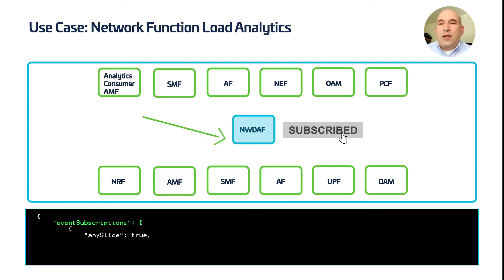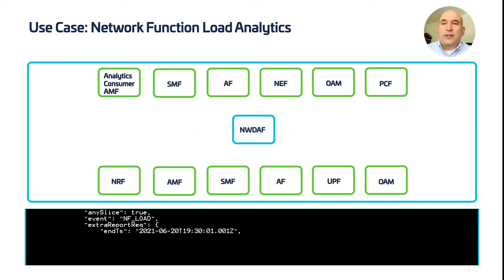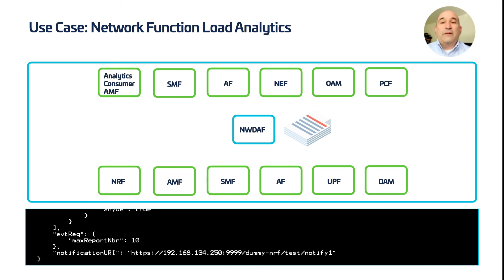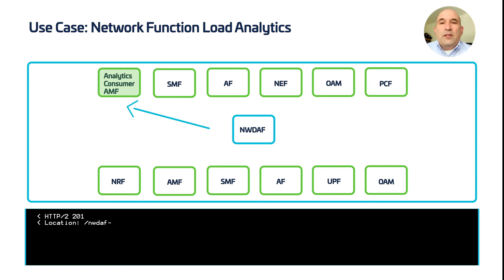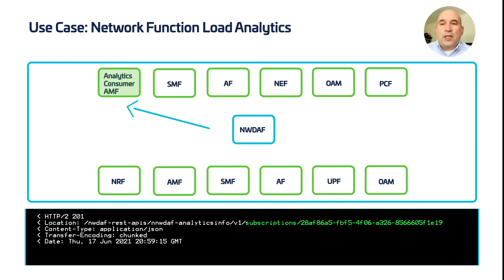An analytics consumer can subscribe for future notifications for these predicted values. In this example here, the analytics consumer requests a report every 60 seconds for the same SMF instance beginning David Alpha Foxtrot. The NWDAF responds with HTTP 201 indicating success, and an analytics subscription ID, this one beginning 28 Alpha Foxtrot.